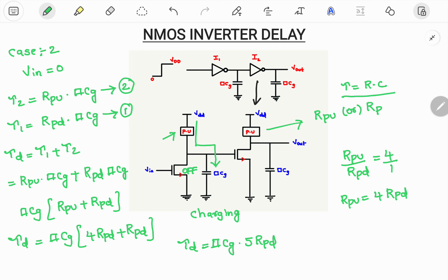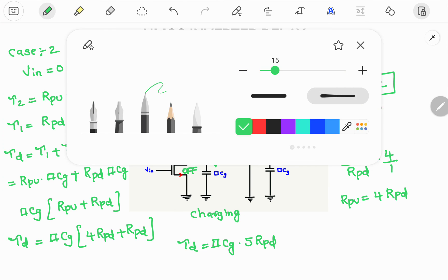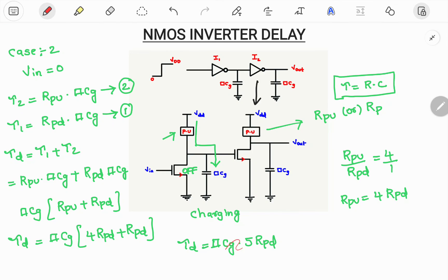We already know that tau is R into C. So what I will do is I will simply replace this particular CG and RPD with tau. So that you can write this as 5 tau. So this is the total delay. This is the final answer for NMOS inverter delay which is 5 times time constant. Tau D equals 5 tau.